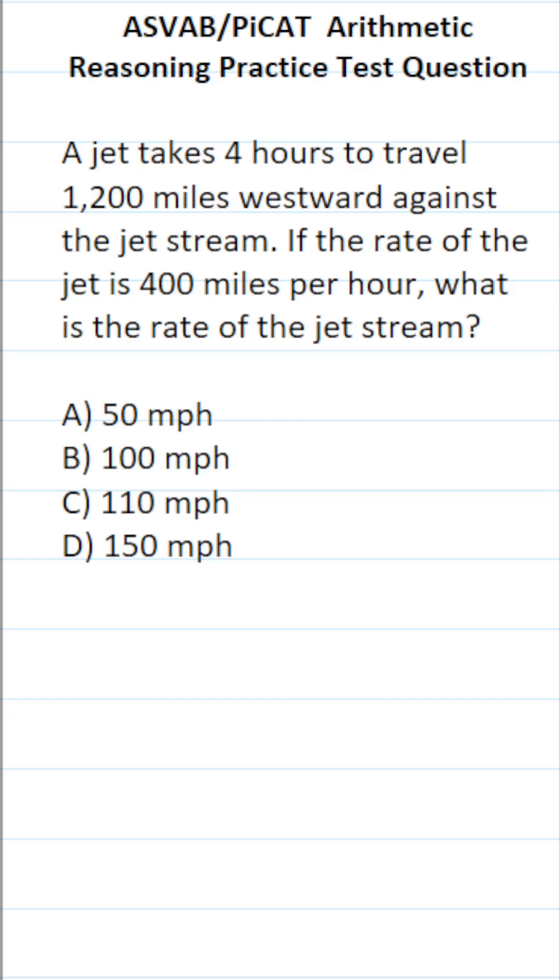This arithmetic reasoning practice test question for the ASVAB and PiCAT says: a jet takes four hours to travel 1,200 miles westward against the jet stream. If the rate of the jet is 400 miles per hour, what is the rate of the jet stream?